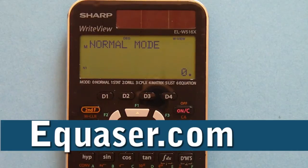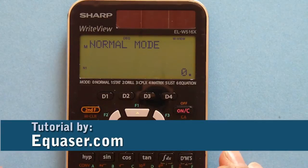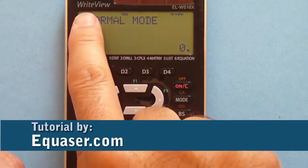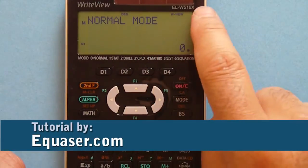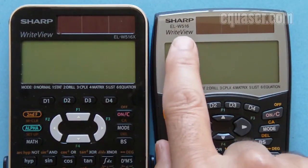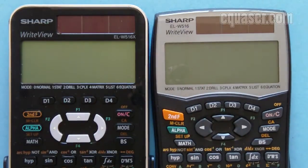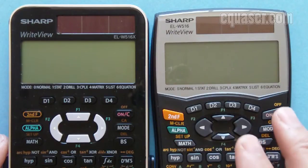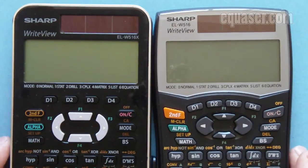Hello everyone, welcome to a tutorial from Equazor.com. In this tutorial we are going to use the constant values of the Sharp scientific calculator EL-516X. These two calculators, ELW-516X and ELW-516, are exactly the same in terms of functionality and features, except the shape and look of the calculators have changed.